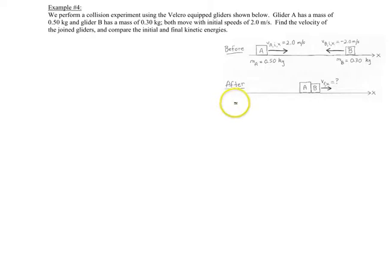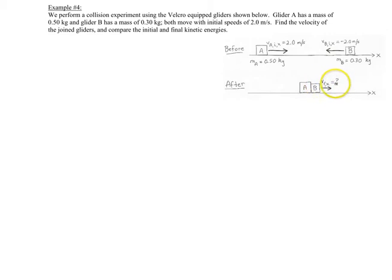Welcome to example 4. This is a collision between two gliders, glider A and glider B, that have a Velcro strip between them. When they come together, they're going to stick together and leave with a final velocity. Glider A has a mass of 0.5 kilograms, glider B has a mass of 0.3 kilograms, and their velocities are equal and opposite.